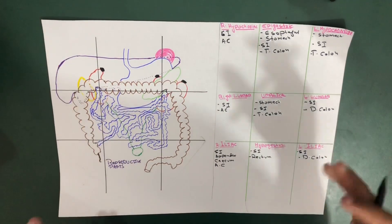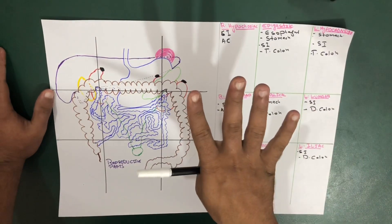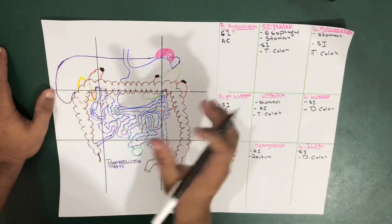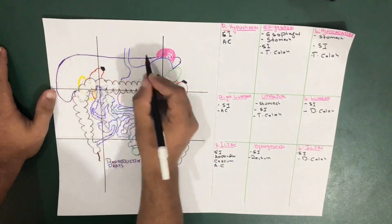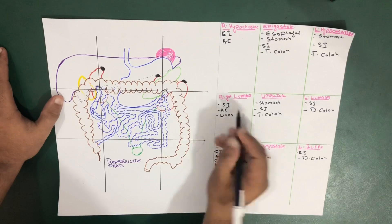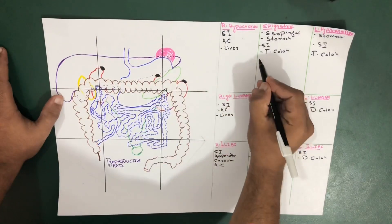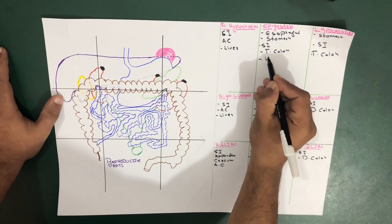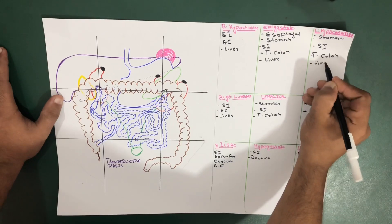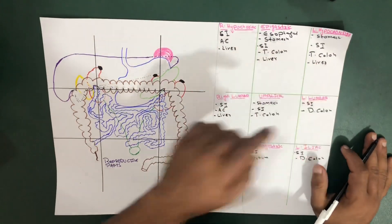We're going to talk about the liver. The liver is actually in four regions. Using the diagram, you can see the liver starting here. It's included in the right lumbar region, crossing upward into the right hypochondriac region, crossing the epigastric region, and also in the left hypochondriac region. So four regions: right lumbar, right hypochondriac, epigastric, and left hypochondriac.